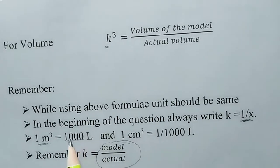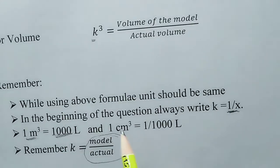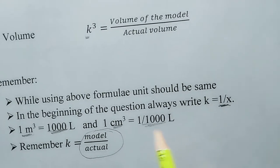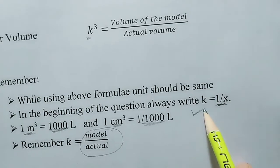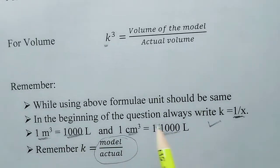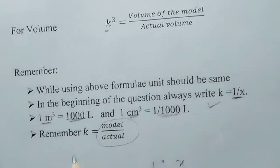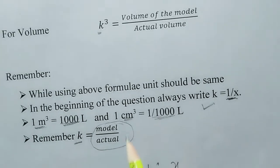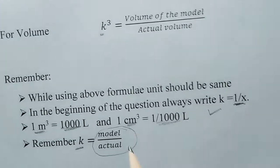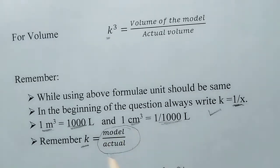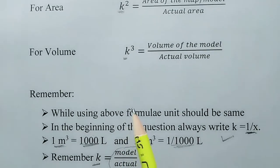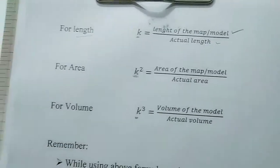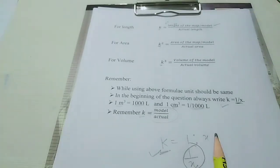Also remember these unit conversions for volume questions: 1 meter cube equals 1000 liters, and 1 centimeter cube equals 1 upon 1000 liters. And remember, k is always model upon actual, or map upon actual. Keep these four things in mind while solving questions.